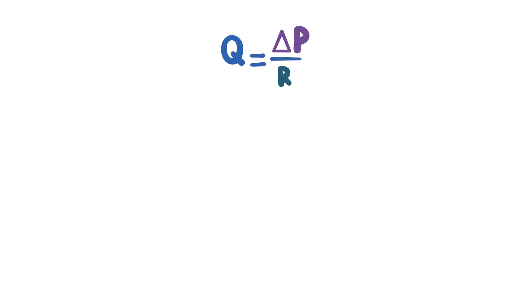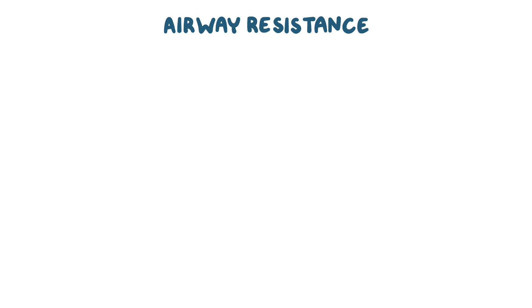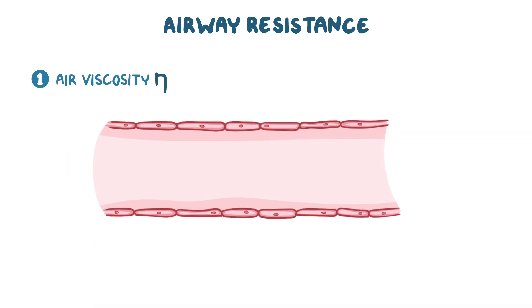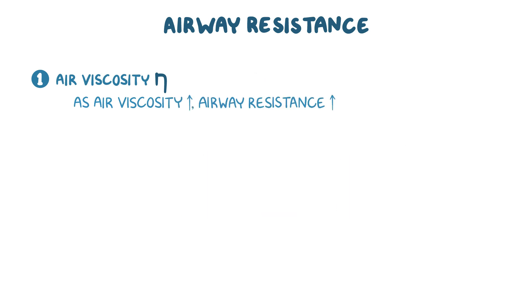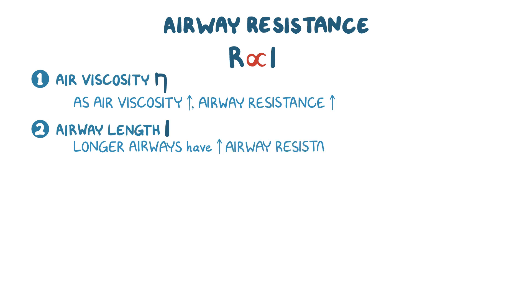While airflow is increased by increasing the pressure difference, it is decreased by increasing airway resistance. Airway resistance is influenced by three main factors. The first factor is air viscosity, represented by the Greek letter eta — how hard it is for gas particles in the air to slide past each other. The relationship between airway resistance and air viscosity is directly proportional, so as air viscosity increases, airway resistance increases as well. The second factor is airway length, represented by the letter L. Like viscosity, the relationship is directly proportional — longer airways have higher resistance than shorter airways.